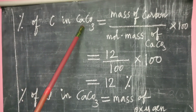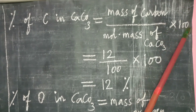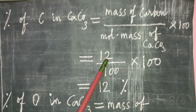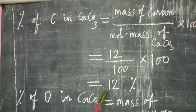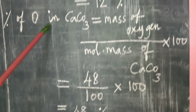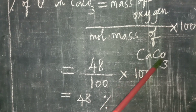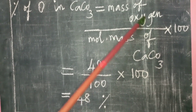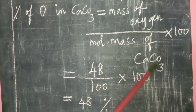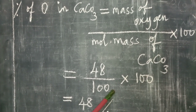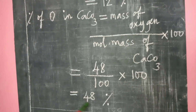Percentage of carbon in CaCO₃ = (mass of C ÷ molecular mass of CaCO₃) × 100 = (12 ÷ 100) × 100 = 12%. Percentage of oxygen = (mass of O ÷ molecular mass of CaCO₃) × 100 = (16×3 ÷ 100) × 100 = (48 ÷ 100) × 100 = 48%.